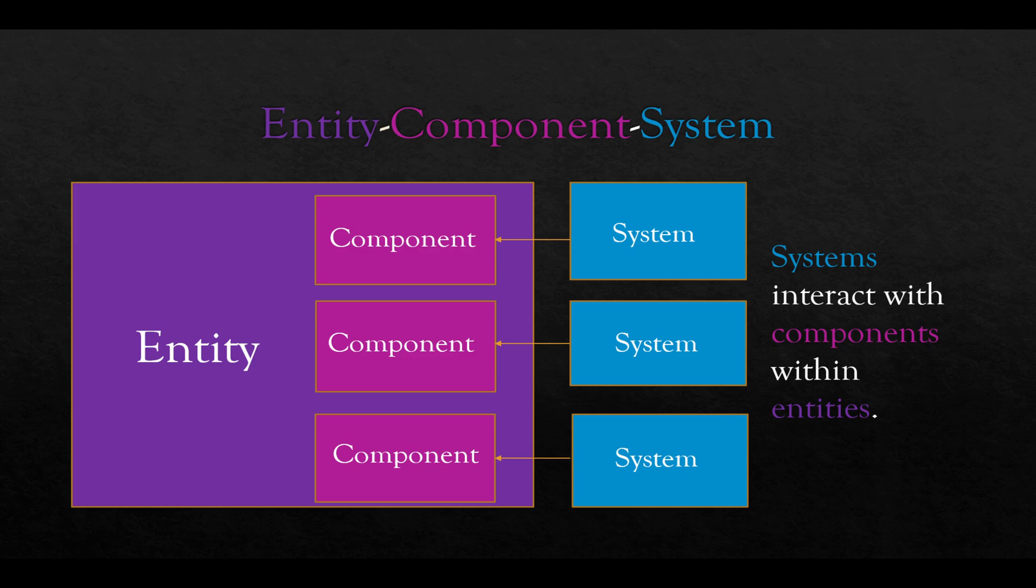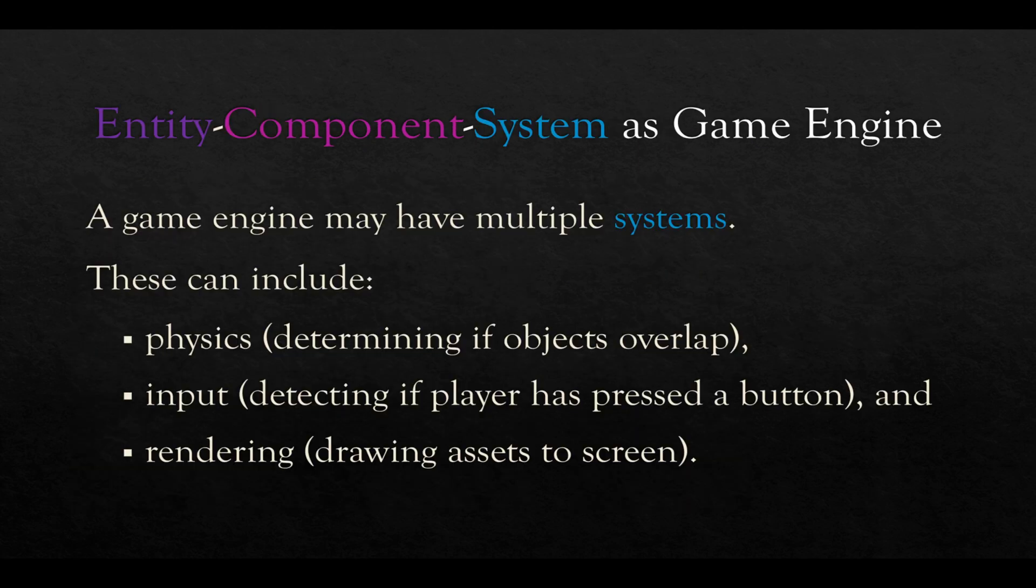Let's ground this conceptual model of Entity Component System within a slightly more generic idea of a game engine. A game engine may have multiple systems. These could include a physics system, determining if objects overlap, an input system, detecting if a player has pressed a button, for example, and a rendering system, drawing assets to a screen.